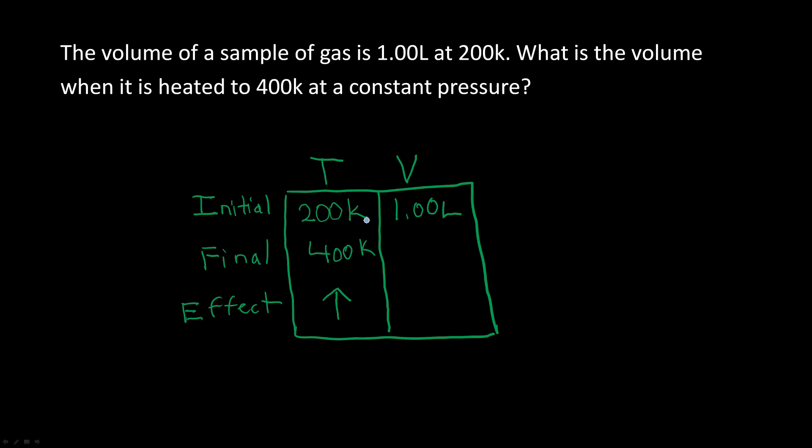And if anything, what we learned from Charles Law is that as temperature increases, volume also has to increase at the same time, and at the same proportion, because temperature and volume are proportional. So what this means is we have to divide the temperature in a way so that we get a positive outcome that would increase the volume. So in this case, it's going to be final over initial, which is going to be 400 Kelvin over 200 Kelvin, and we'll get 2.